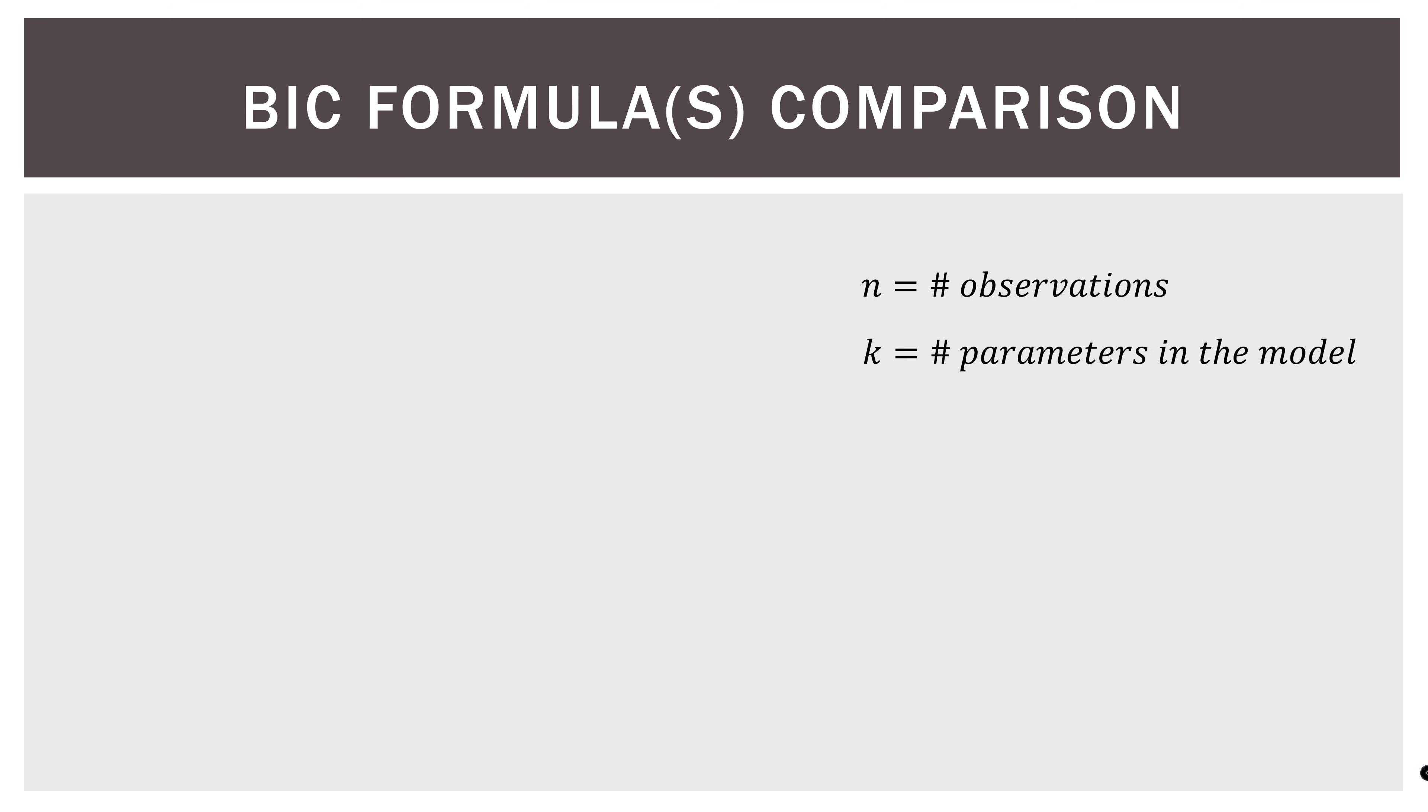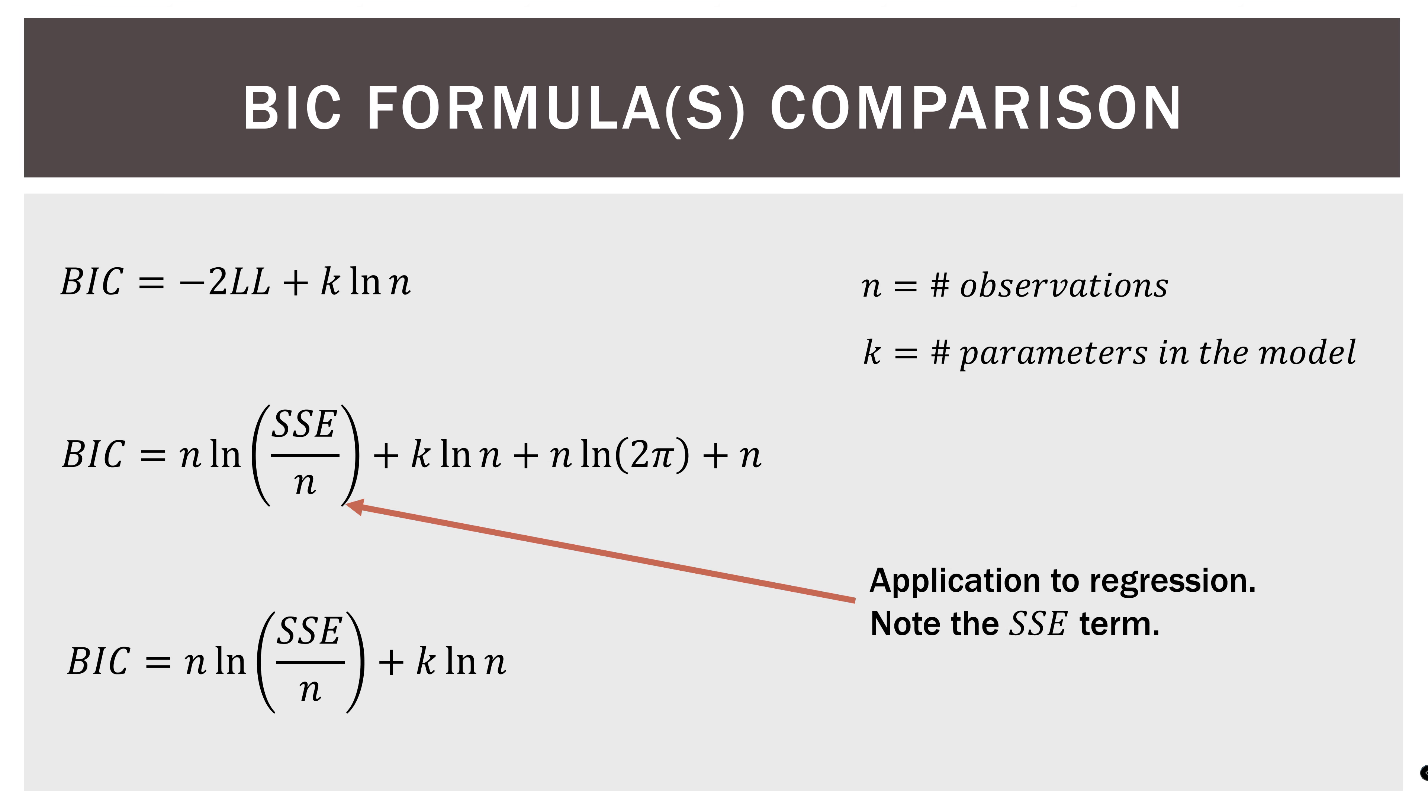So same thing for the BIC. Here is the first version of that formula. Here is a second version of that formula. And here is the third version. Now, of course, you'll notice the same thing. We have the SSE term here in the middle and on the bottom, by the way. And we can use these to approximate under the special case of regression.